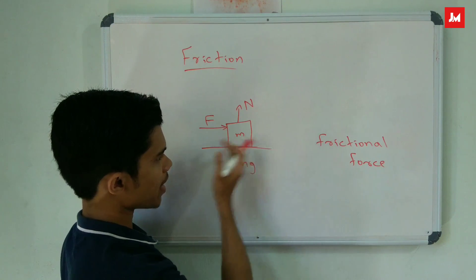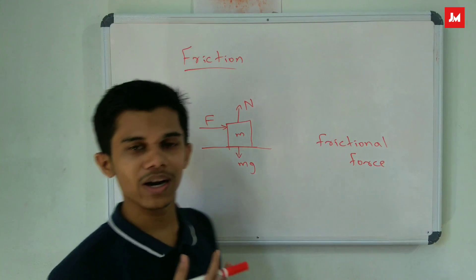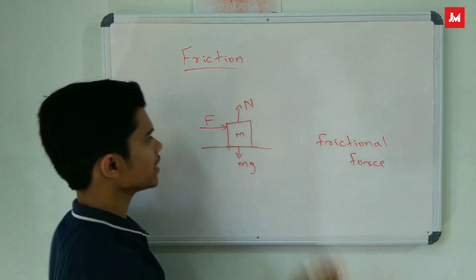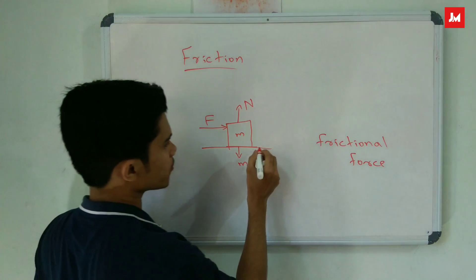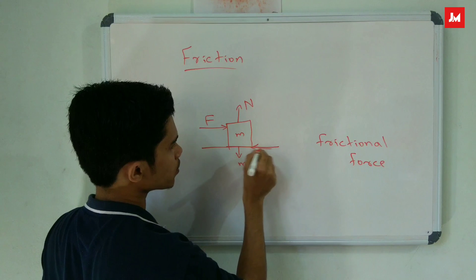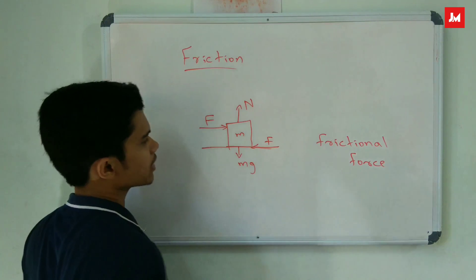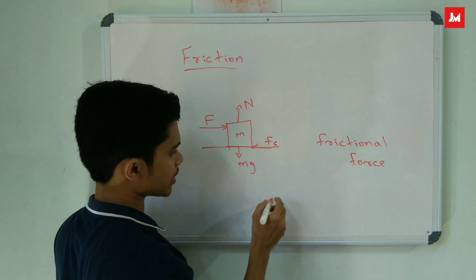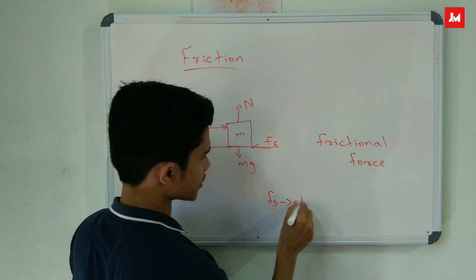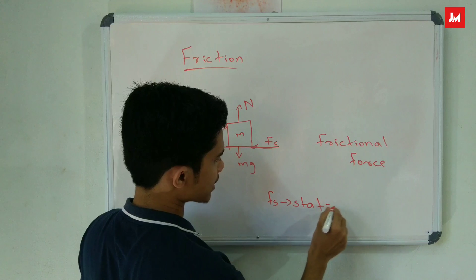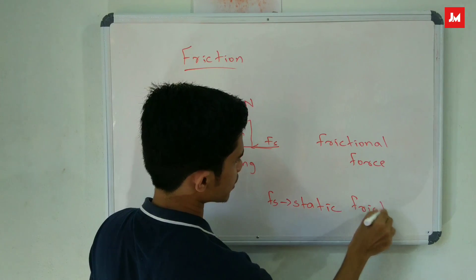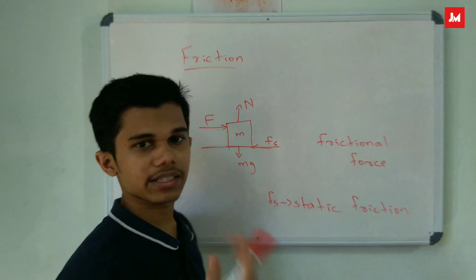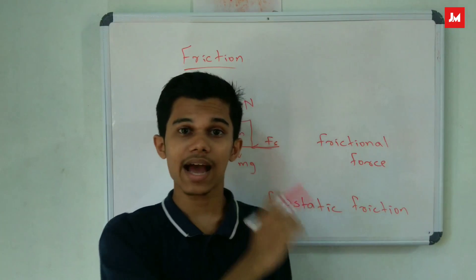Frictional force — that means frictionally. Frictional force is represented as F. F is a small letter F, then S. F-S is static friction. S is static friction.